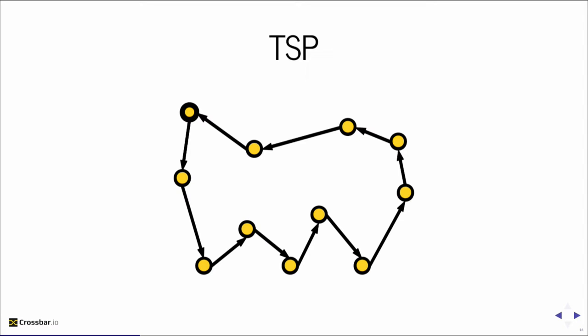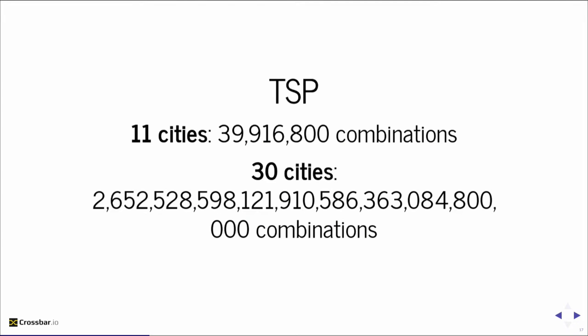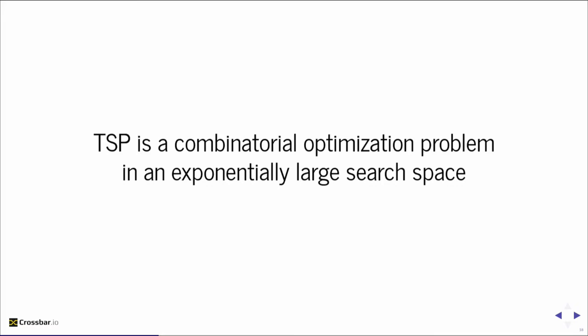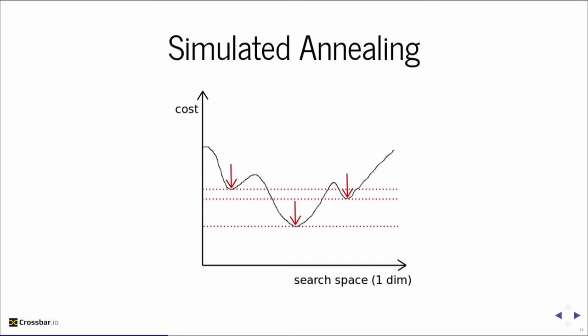The number of possible routes grows exponentially with the number of cities — even for a moderate number of cities it's an astronomically large number. Exhaustively checking each possible route isn't practically possible, so we need something better. The Traveling Salesman Problem is a combinatorial optimization problem with an exponentially large search space, and there is no closed-form solution.